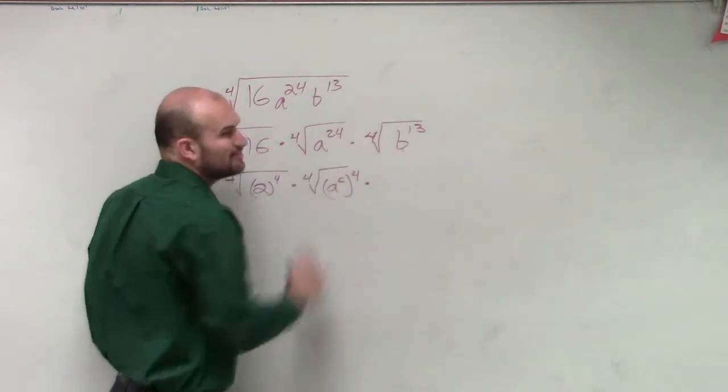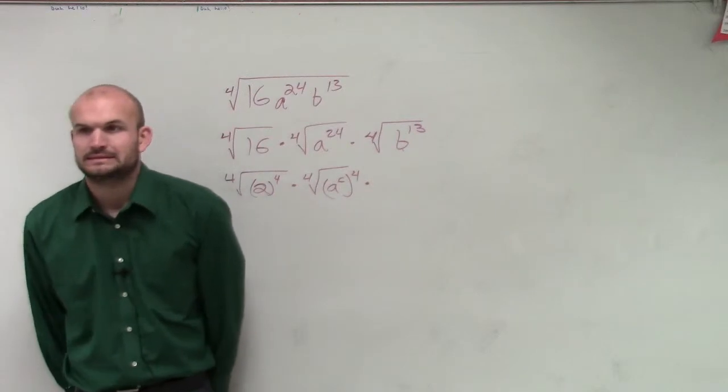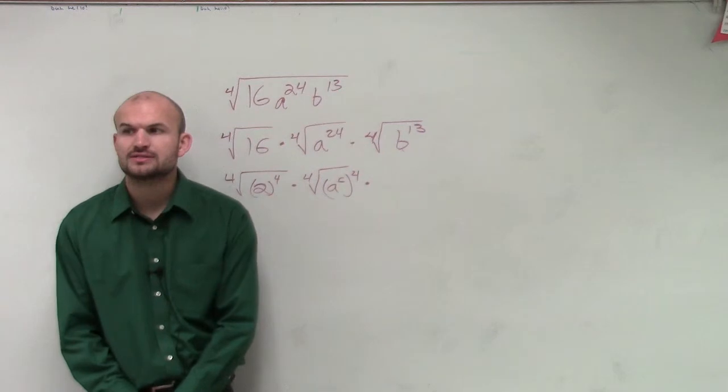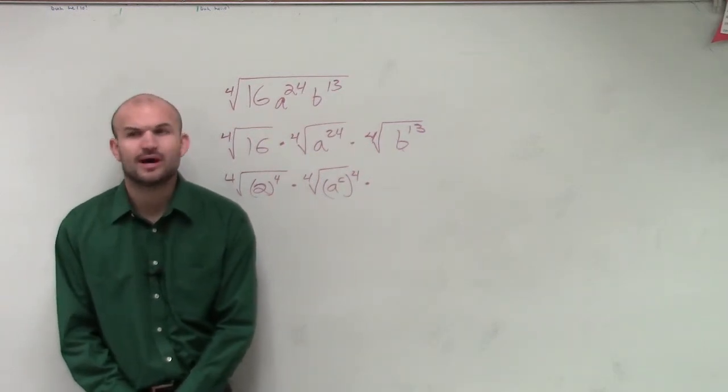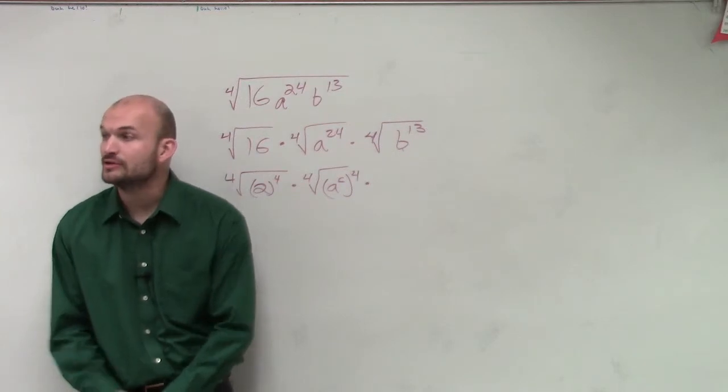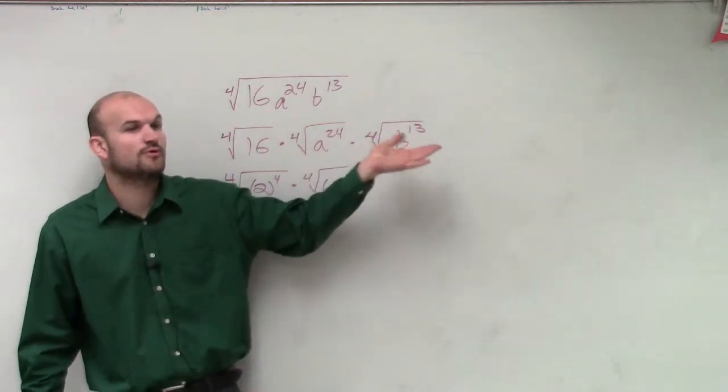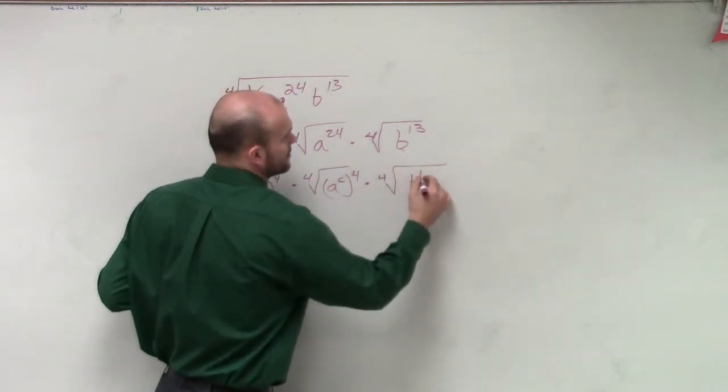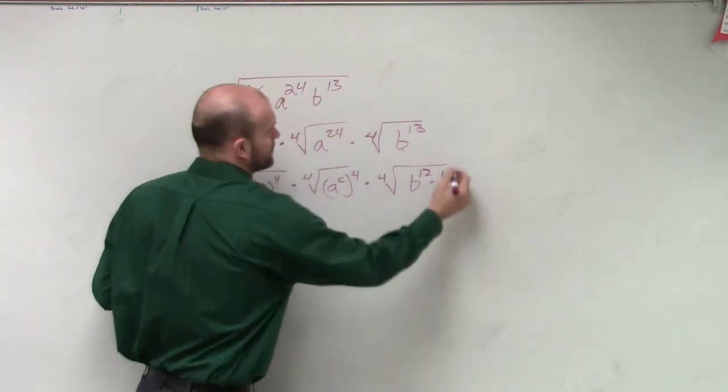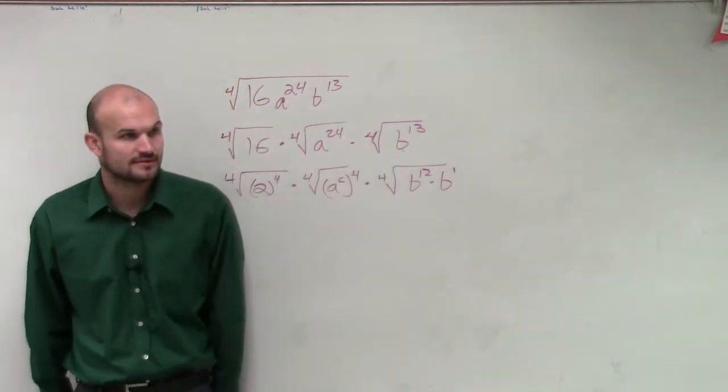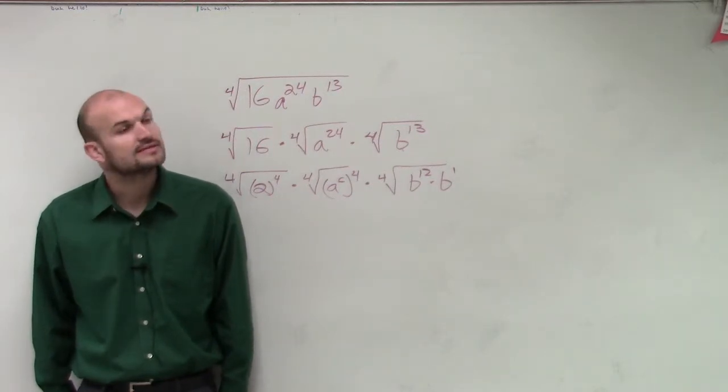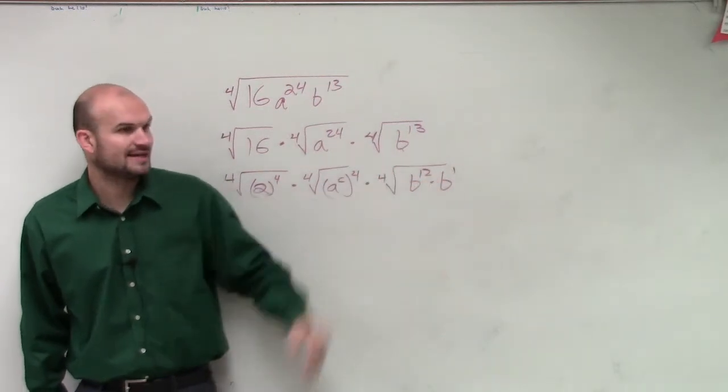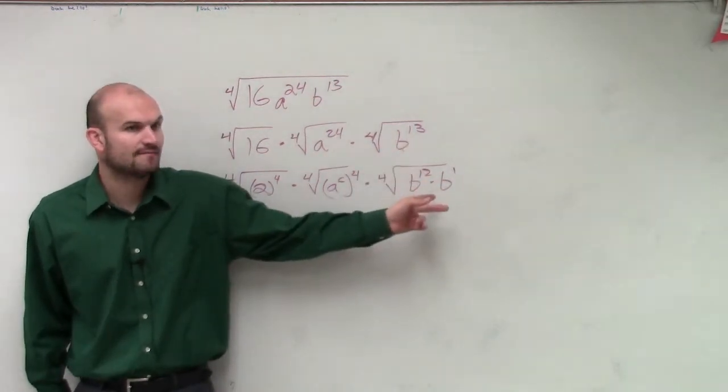Then what about b to the 13th? We can't, can we? We're not gonna be working with our fractions. So what are we going to do then if we have a number that's not divisible by our root? What we can do is, well we know that 4 doesn't go into 13 but 4 goes into 12, right? So let's see if we can break this up again. What if I did this? Is that still b to the 13th? Right? Yes? I'm multiplying, but remember when you multiply your variables you add the exponents. So is this still equal to that? Cool.